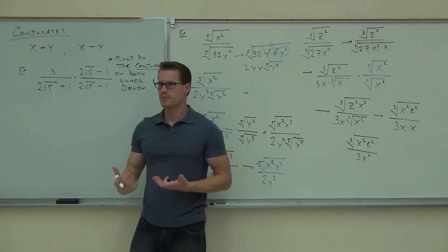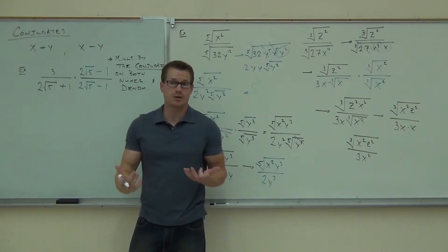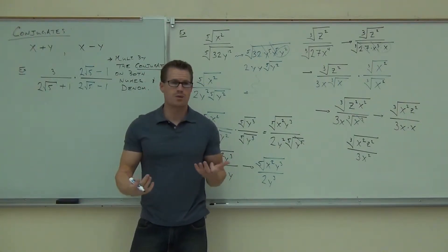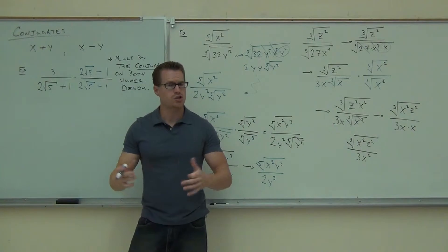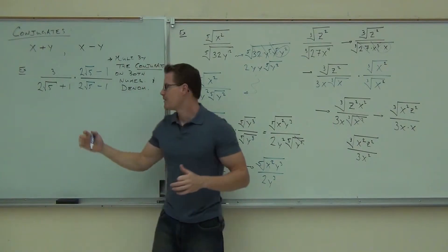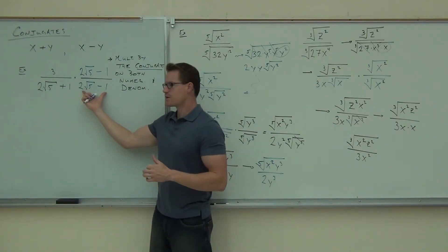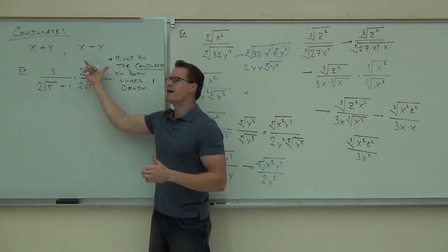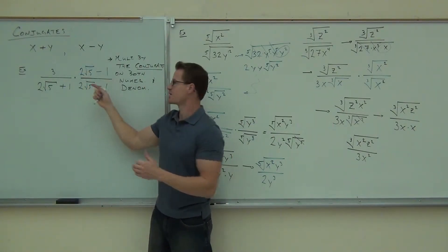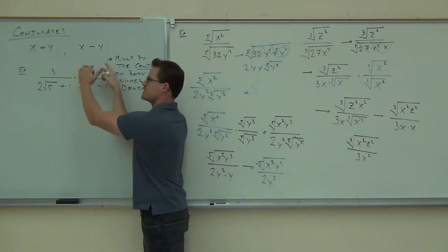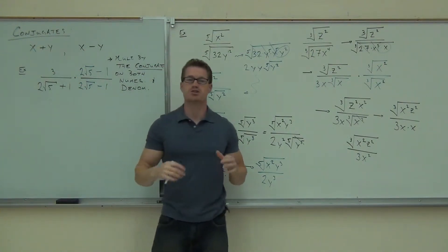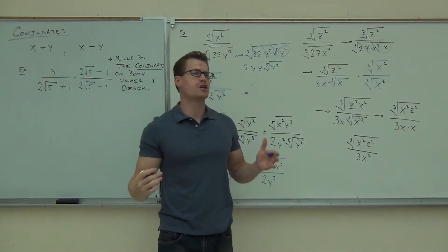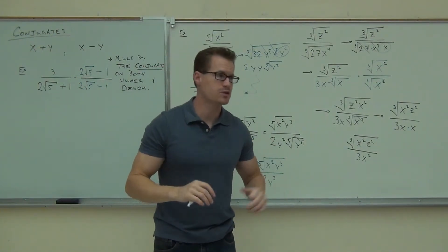That wouldn't make one anymore, would it? I'd have something different — that would be a different expression. So whatever you have here, whatever your conjugate is, you have it in both spots. This is actually being multiplied by one. That's why we're not changing the value; we're just changing the way it looks.